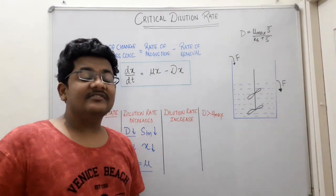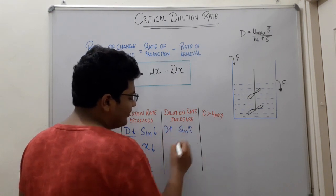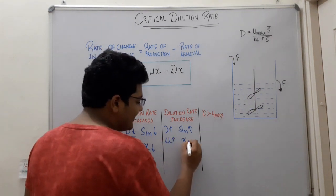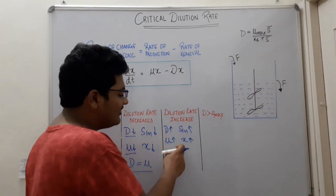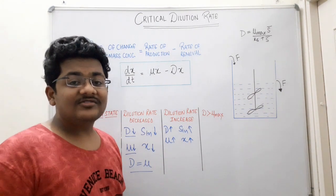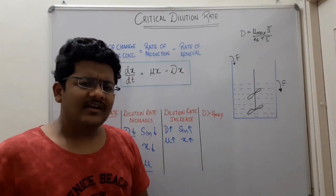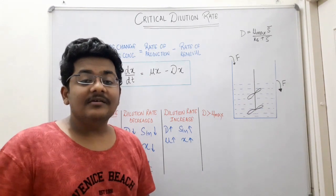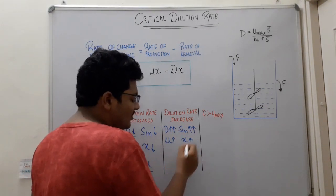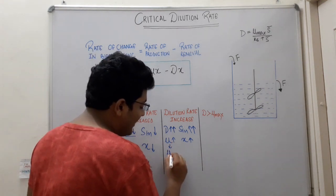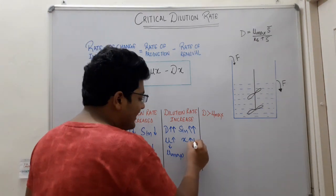Now let us understand what happens if we increase the dilution rate. If D increases, the substrate inflowing inside the bioreactor increases, which means μ increases and the steady state biomass concentration also increases. But μ can only increase up to μmax — the maximum specific growth rate. If we further increase D, S_in will further increase but μ will reach its maximum level, μmax, and X will further increase.